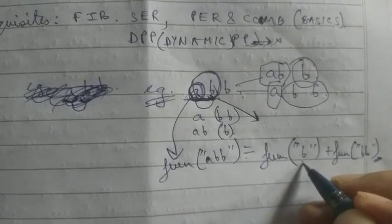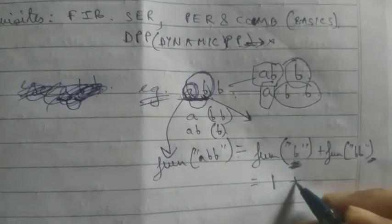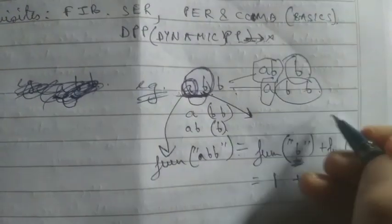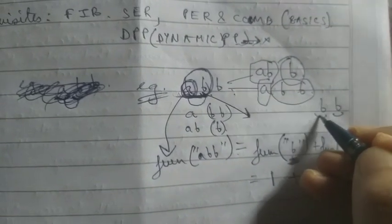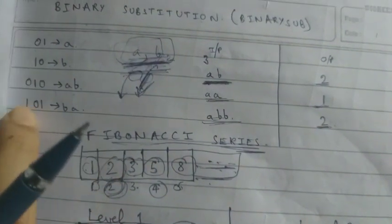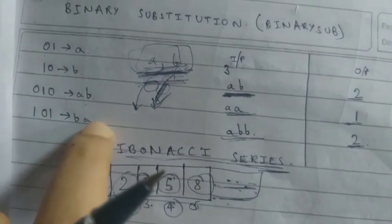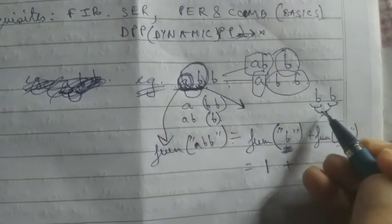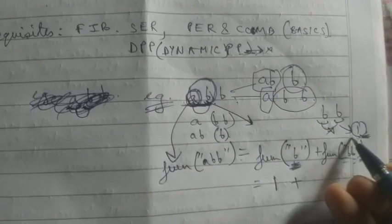For B of length 1, we return 1. For B, B — we check whether B can be paired with B or not. No, it can't be paired because looking at the given question, it's only A, B or B, A — there is no B, B pairing. So we return 1 for B, B as well, and for B alone we return 1.